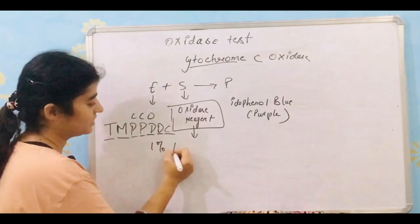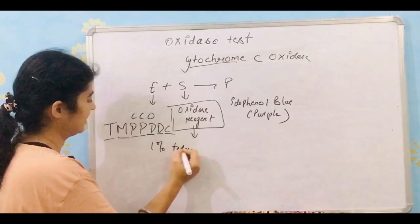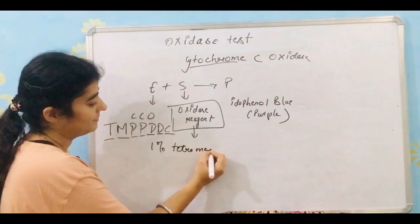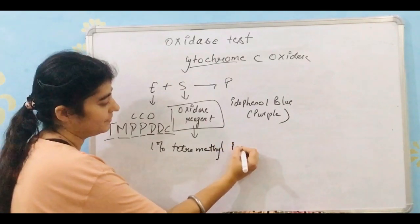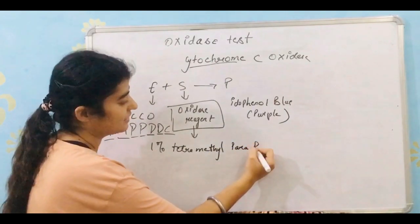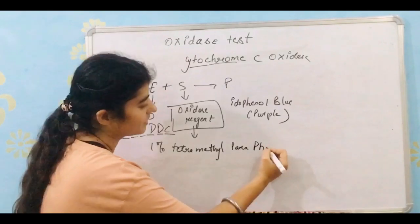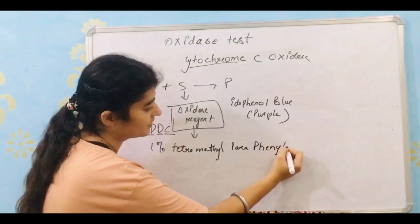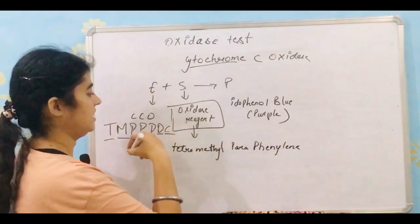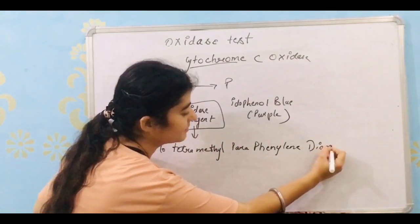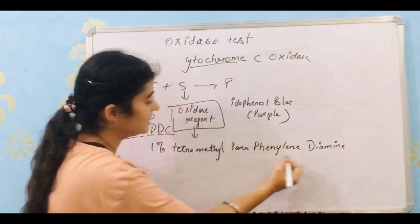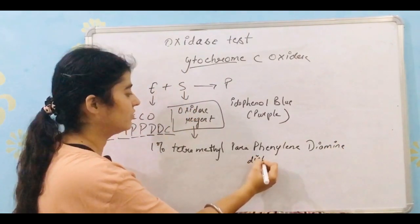So T stands for tetra, M for methyl, first P stands for para, another P stands for phenylene, D for diamine, then dihydro, and the last D for dichloride.